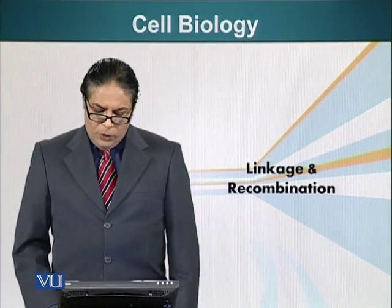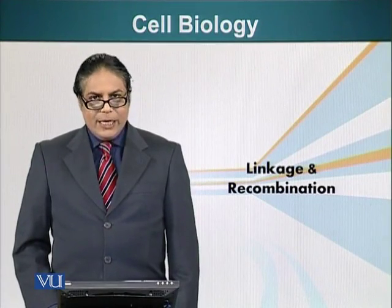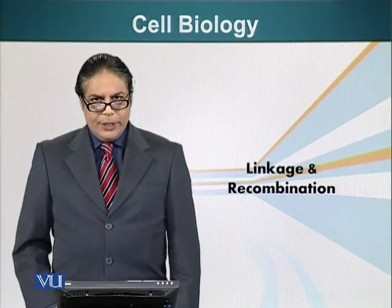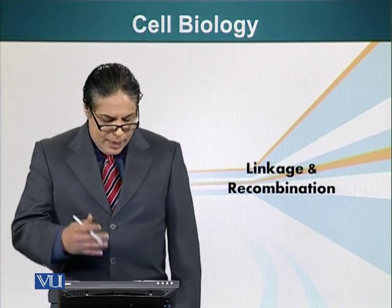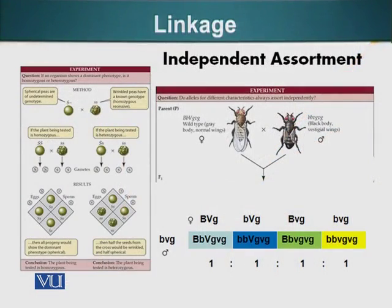In this module, we will talk about linkage and recombination. A scientist by the name of Thomas Hunt Morgan was doing experiments on fruit flies. He was looking at transmission of genes from one generation to the next. I will give you an example of one of his experiments.